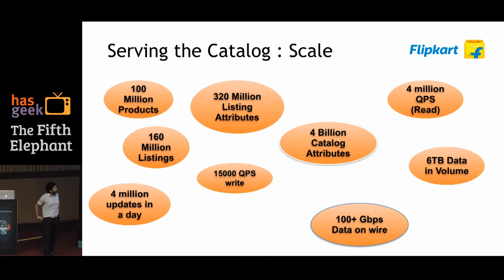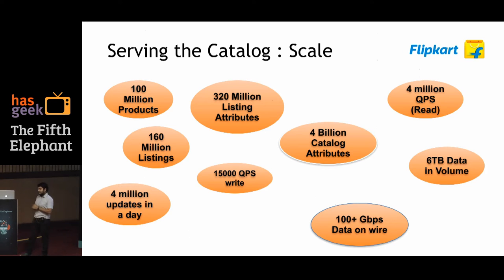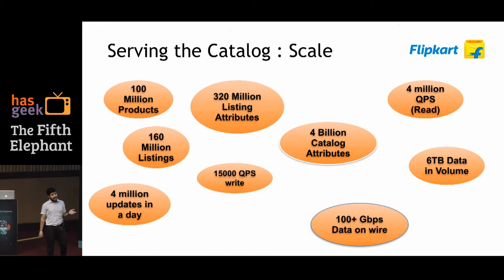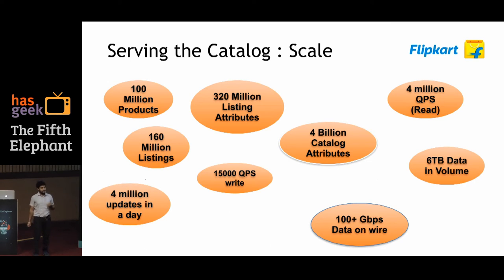Before going further, let me throw some numbers at you so we know what scale we're talking about. There may be dozens of ways to approach these problems, but things get funny at scale. The numbers: four million read QPS, a data set running into double-digit terabytes, two to three billion documents, and write QPS — the velocity of updates — at 15 to 20 thousand QPS. It's a very, very large data set.